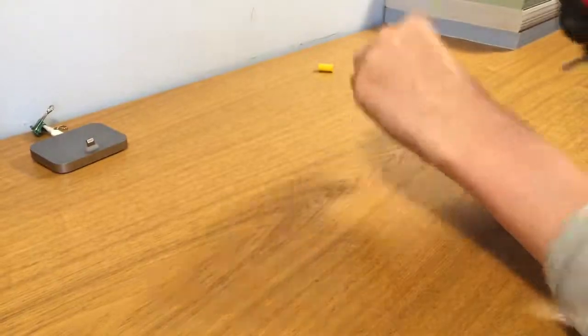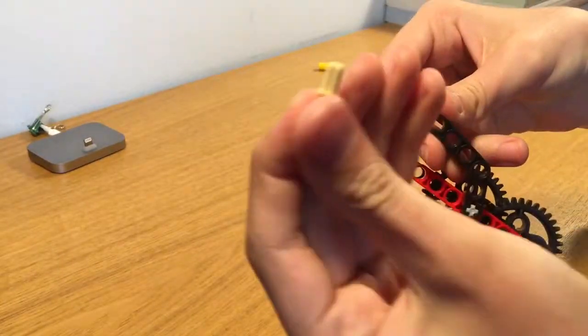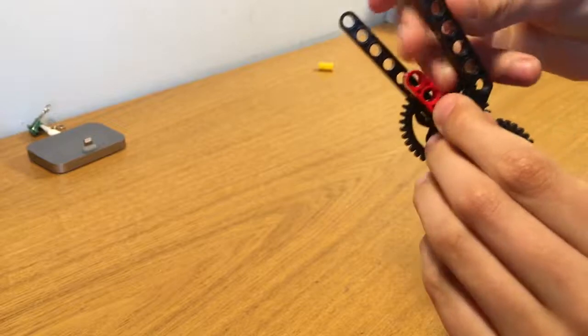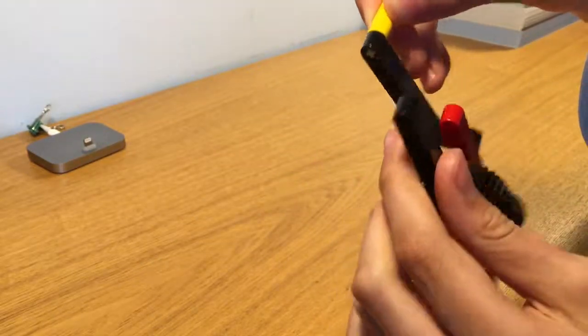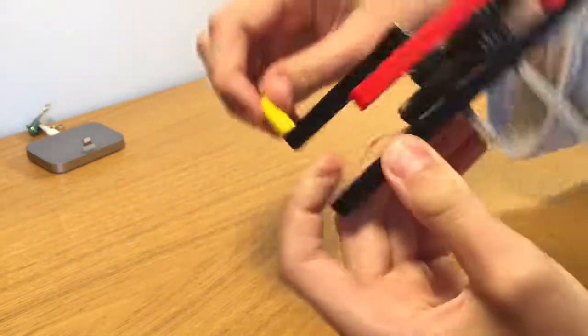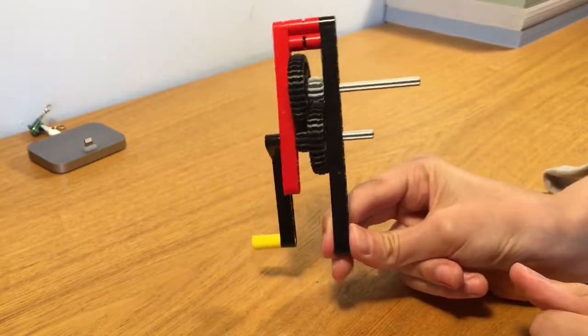Then, on the end, take the tan pin and put it through the slot. Then take the other pin extension and put it on there. And now you have an impossible gearbox.